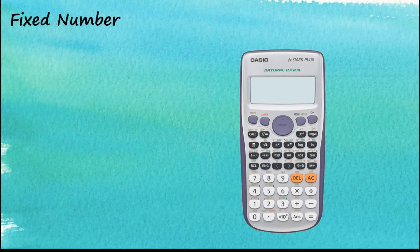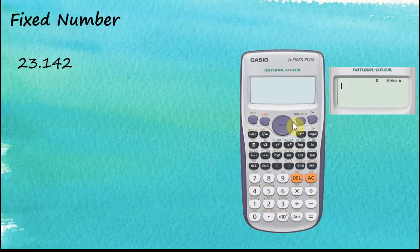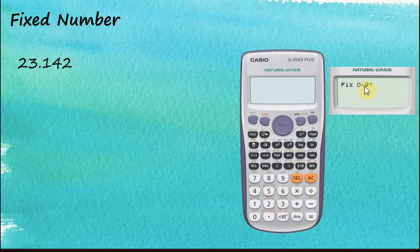Now let's look at the fixed number mode. Instead of fixing the number of significant figures, you can fix the answer according to the number of decimal places. For example, this number has five significant figures and three decimal places. If we want it displayed in two decimal places, go to Setup, Shift, Setup, then choose Fix — option six — and tell the calculator we want two decimal places.